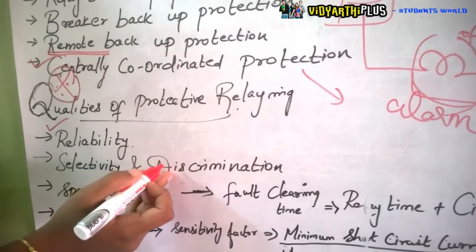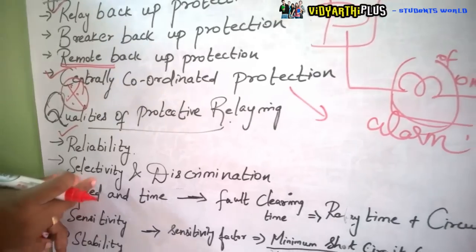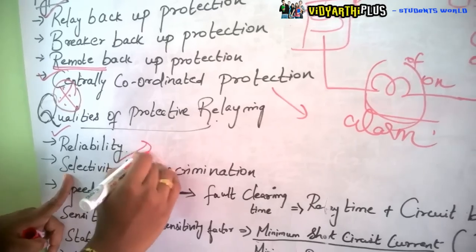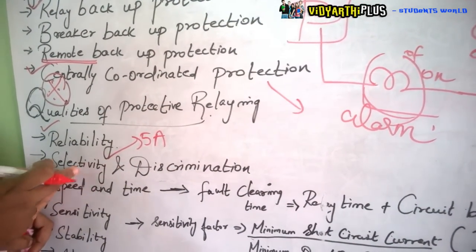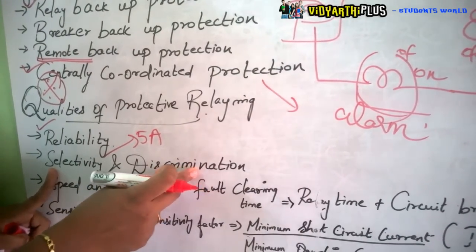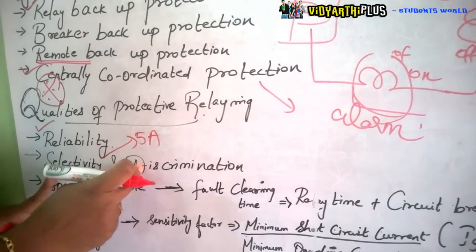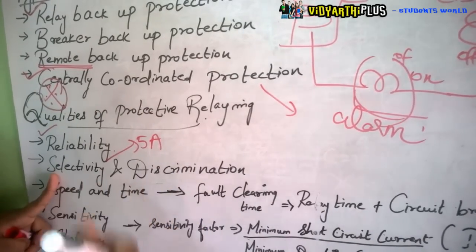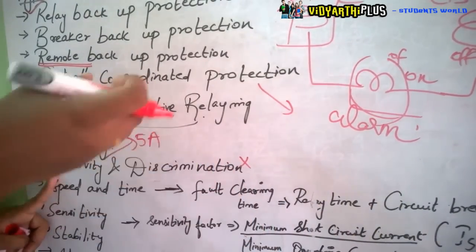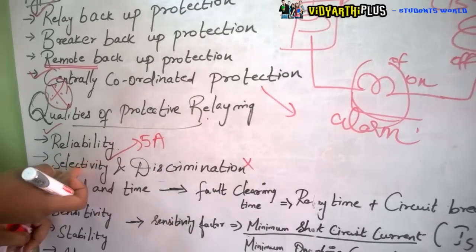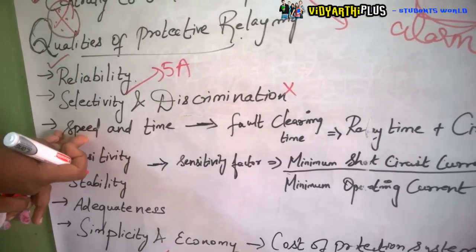Next is selectivity and discrimination. Selectivity means the relay first selects the fault — for example, if the current which is to be given is 5 amperes and the current goes beyond 5 amperes, that should be selected. Then discrimination means separation — immediately if the current goes beyond 5 amperes, the relay goes from off to on, and the circuit breaker from on to off, so the faulty path is separated from the healthy path.